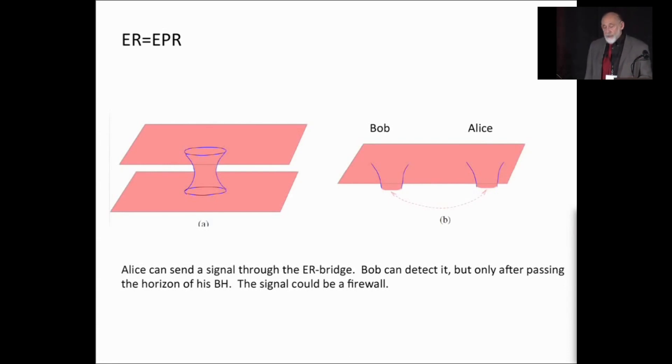As Juan said, Alice can jump into one end. If the Einstein-Rosen bridge is big enough, she might survive for a while. Bob can jump into the other end, and they can meet at the center for a sort of short, whatever it is that Alice and Bob do when they get together. And as Juan said, they won't last very long, but they might be happy for a short period of time.